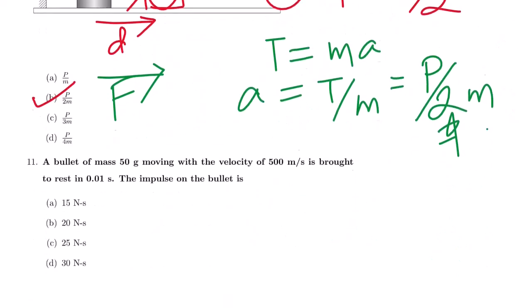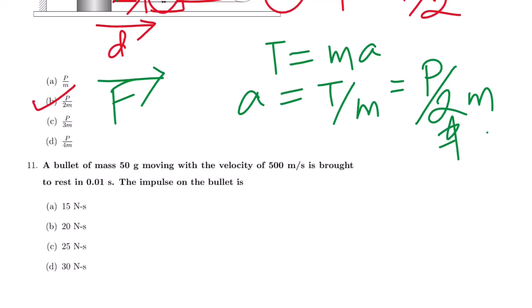Question 11: A bullet of mass 50 grams moving with a velocity of 500 m/s is brought to rest in 0.01 second. The impulse on the bullet equals the change in momentum: initial momentum = 0.05 × 500 = 25 kg·m/s, final momentum = 0. Impulse = 25 newton·seconds.